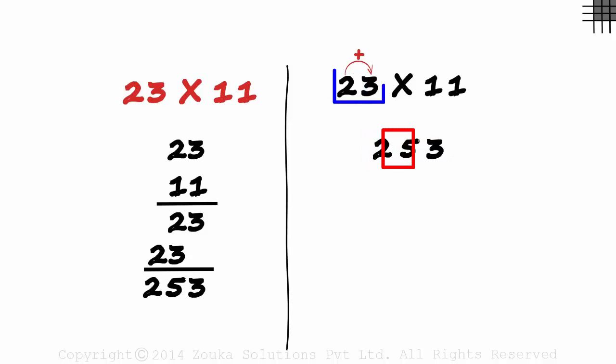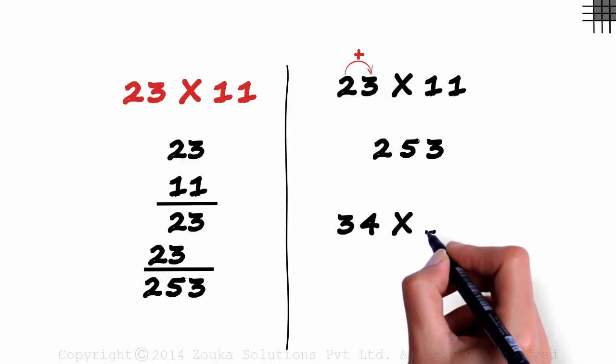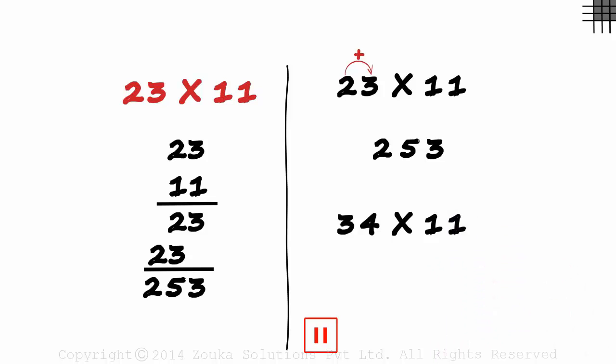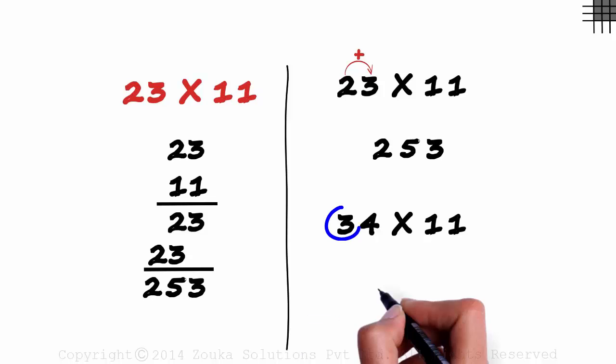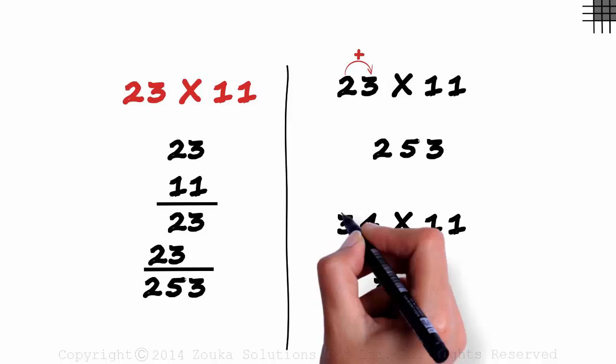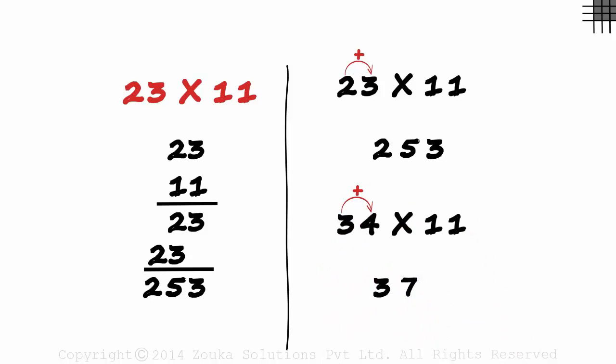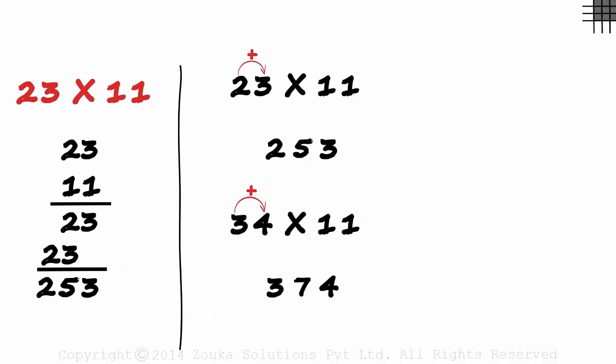First digit, sum and the last digit. With the same logic, try multiplying 34 with 11. First digit 3 as is. Then 3 plus 4, 7. And the last digit 4. 34 times 11 is 374.